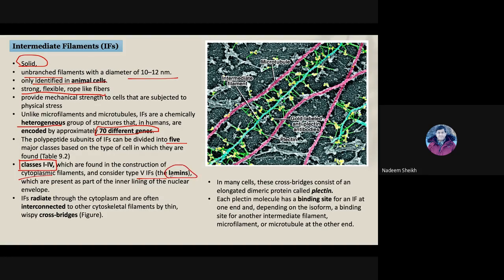Class five intermediate filaments, the lamins, are components of the nuclear envelope and line the nuclear envelope. As far as their positioning within the cytoplasm is concerned, intermediate filaments radiate throughout the cytoplasm and interconnect different cytoskeletal elements like a cross-bridge. In this micrograph, the red-colored structure refers to microtubules.